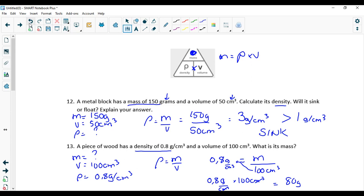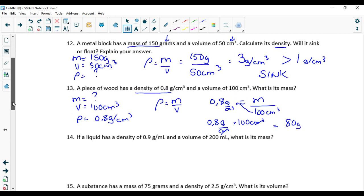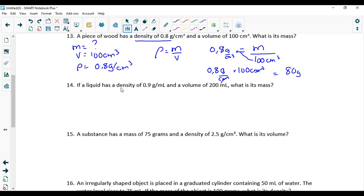If you wanted to find, let's try that again. If you wanted to try volume, hide the volume and you end up with mass divided by density. That's how you use that triangle.